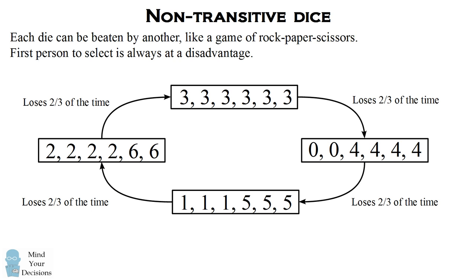The first person who selects the die is always going to be at a disadvantage to someone who picks second, because each die can be beaten by another.